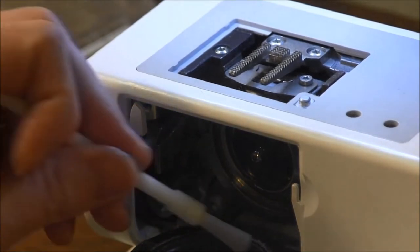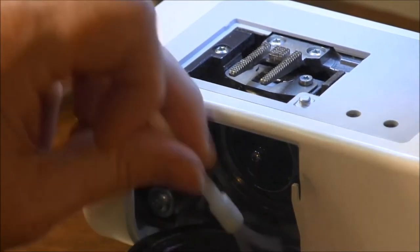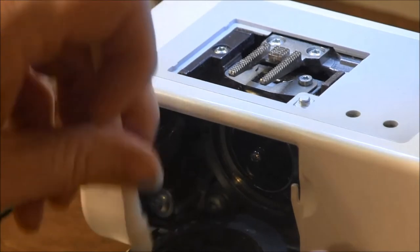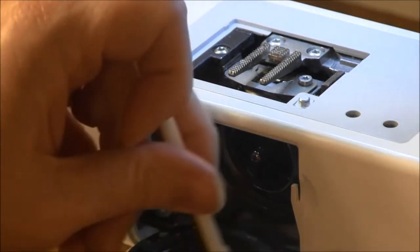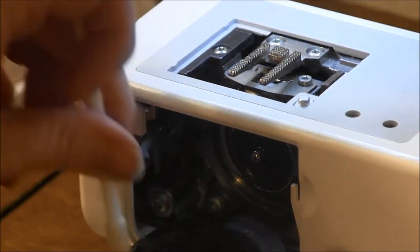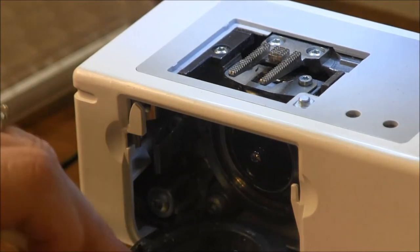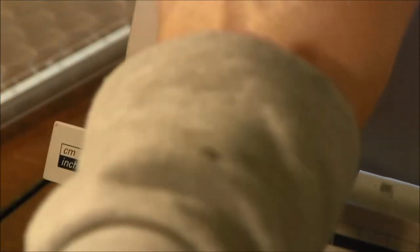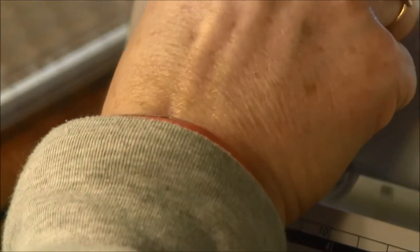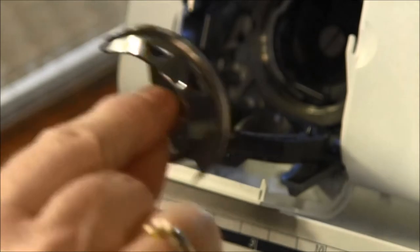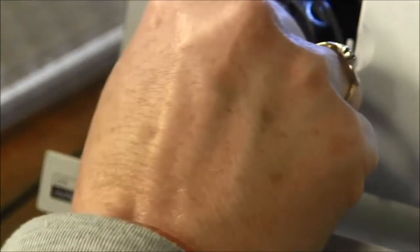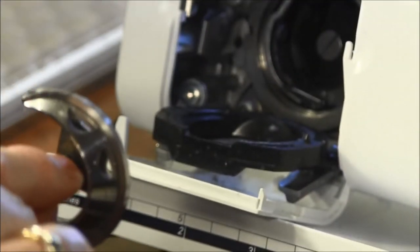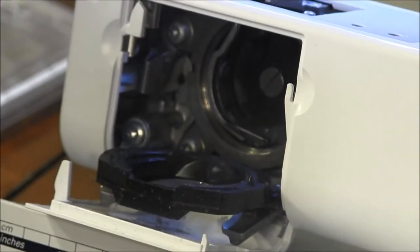With the hook race cover down, you can clean around the cover with your soft brush. Don't use anything rough or pointy to clean. The next thing you pull out is the hook race or the hook itself. Pull that out and make sure you know how you pulled it out so you'll be able to put it in again in the same orientation so you don't get confused.